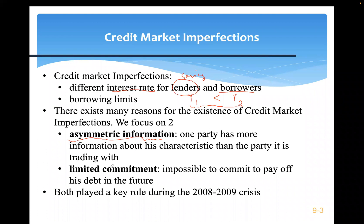The other reason is limited commitment — it's almost impossible to commit to pay off your debt when you borrow, because you always have a temptation to default. Without any punishment, defaulting is essentially an optimal solution, but the punishment distorts the market, particularly the interest rate. Both asymmetric information and limited commitment played a key role during the 2008 financial crisis.